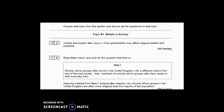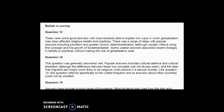Starting with question 13: 'Outline and explain two ways in which globalisation may affect religious beliefs and practices.' For this type of question you are asked to make a connection between two different areas of the specification — in this case, globalisation and its effect on the religious beliefs and practices of individuals. Let's check out what the examiner report says.